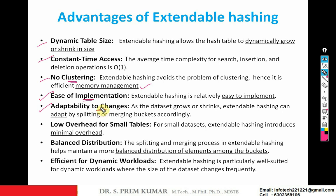Adaptability to changes: whenever a split occurs or buckets are being merged or split, the changes can be comfortably incorporated using extendable hashing. Low overheads for small tables: when a small number of data values are entered, the overheads are less. When there is a large amount of data, extendable hashing is not preferred. For small data sets the overheads are lower and extendable hashing is preferred. Balanced distribution: values get distributed evenly with no skewing among all the buckets.